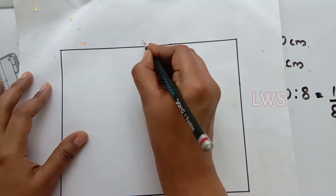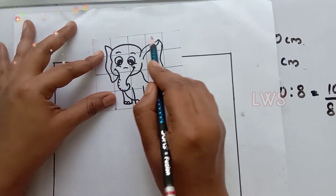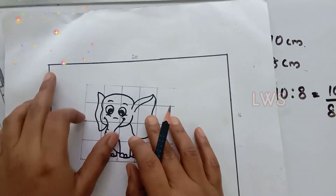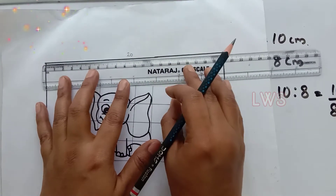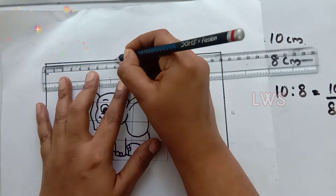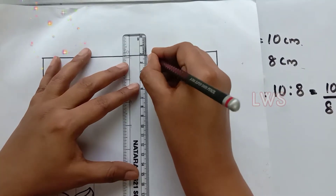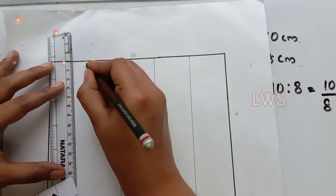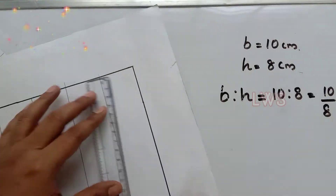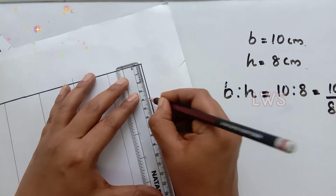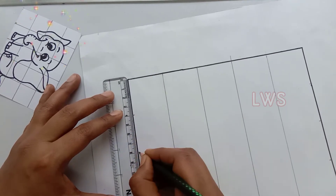Now we draw a border with base 20 cm and height 16 cm and draw a grid on this too. In the original, the base is divided into 5 sections, so here also we do the same. That is 20 divided by 5, which equals 4 cm — so we divide the base into sections of 4 cm each. The height is also divided in the same way, into 4 sections of 4 cm each.